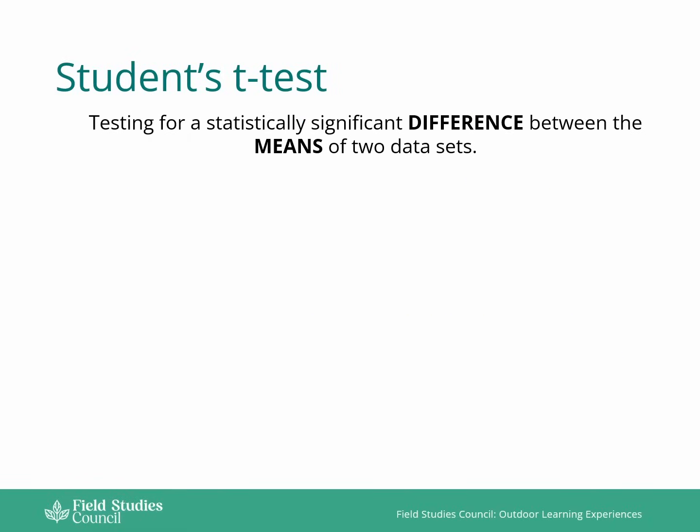Essentially, what a student's t-test does is to test the significance of any difference between the means of the two data sets. But it does this by looking at the overlap between the two data sets.